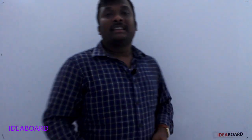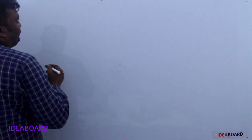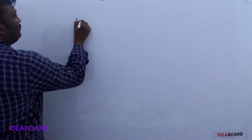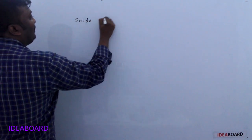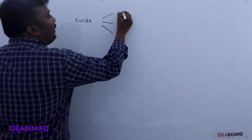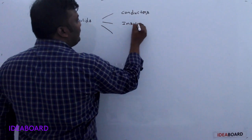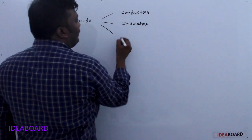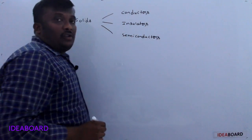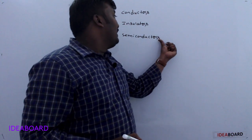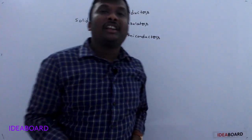On the basis of electrical properties, solids are divided into three categories: conductors, insulators, and semiconductors. The electrical properties of semiconductors lie in between those of conductors and insulators.